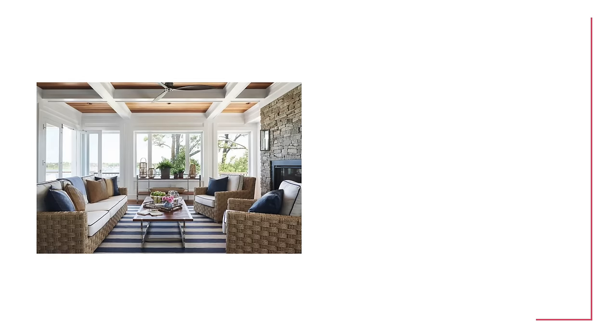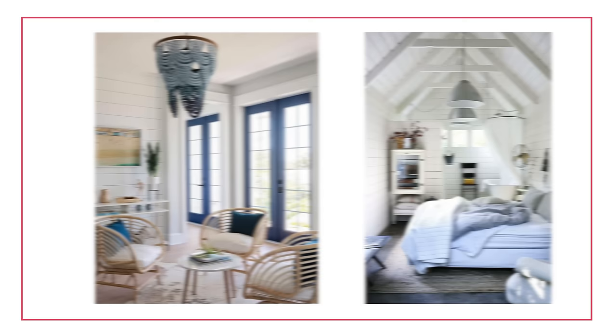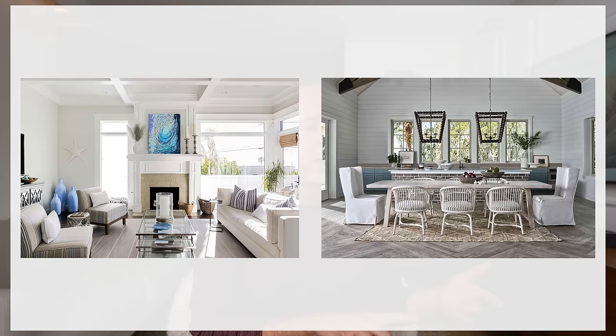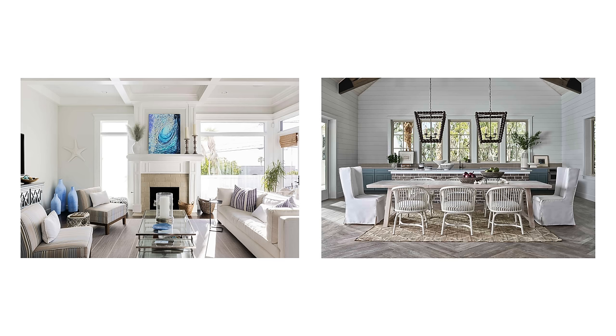Coastal design style reflects a beach or seaside atmosphere. It's characterized by light and airy spaces, lots of use of natural materials, really soft colors — especially in the blue and white category — and some nautical elements as well, though try not to be too theme-y. Colors usually include white, cream, and navy, with a lot of beige, jute materials, and wood. It reflects what you would see on the beach — sand, water, sky.